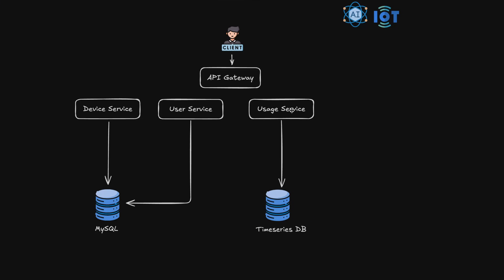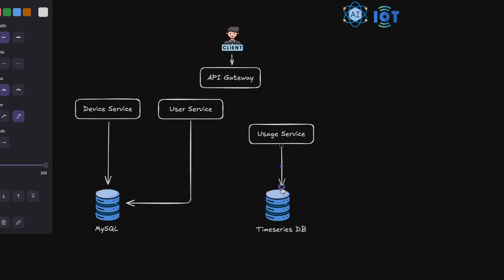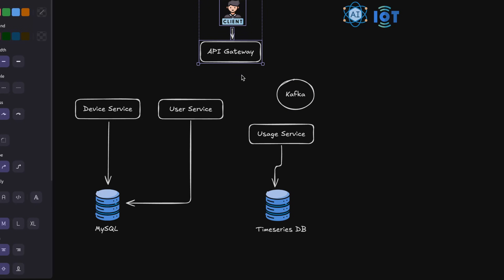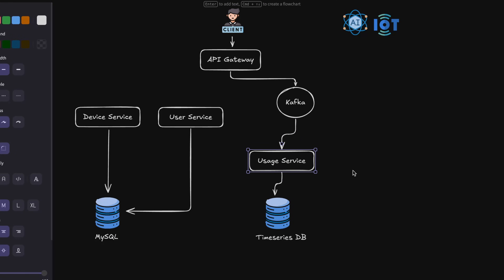The usage service saves data in the time series database, but we need to handle incoming data — around 40,000 data points per second. So we want some kind of queuing system before the usage service so the system is not overwhelmed. We can have a Kafka queue that receives data from the API gateway, sends it to the usage service, and the usage service reads from the Kafka queue when it has capacity, then saves it in the time series database.